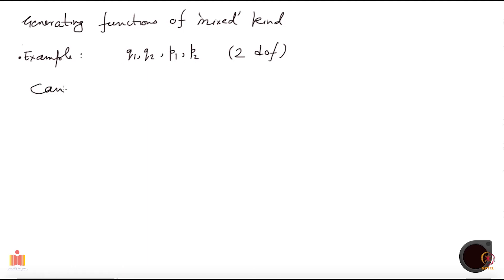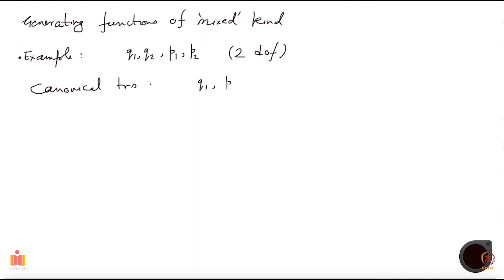Now, you may want to think of a canonical transformation which will keep q1 and p1 unchanged — it does not touch those coordinates — but for q2 and p2 there is some non-trivial transformation. Let us say we want to interchange q2 and p2.